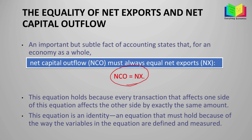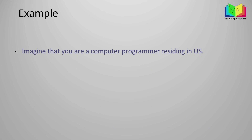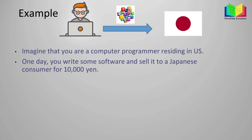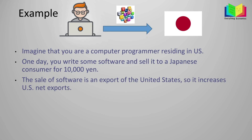In the next example we will show why NCO always equals NX. Imagine you are a computer programmer residing in the US. One day you write some software and sell it to a Japanese consumer for 10,000 yen. The sale of software is an export of the United States, so it increases US net exports.